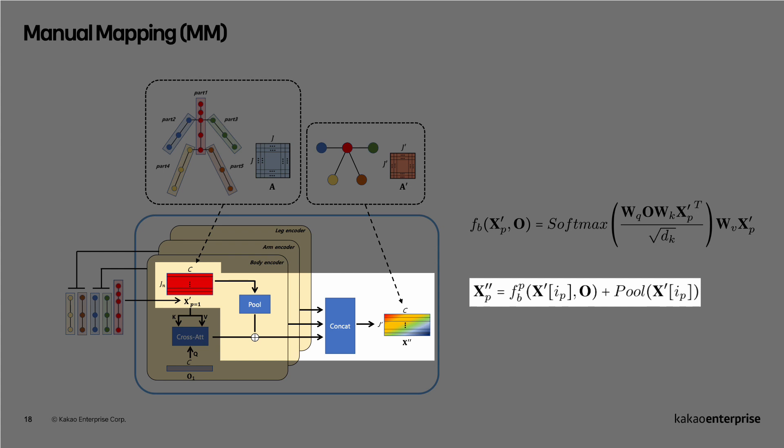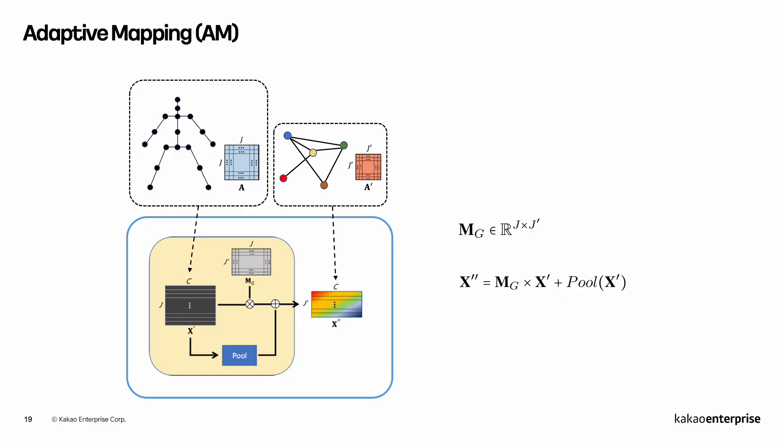Then, X' is pooled along joint axis and added to the output of cross-attention to yield one-dimensional output. Lastly, 1D vectors processed on each encoder are concatenated on joint axis to yield reduced joint feature X''.